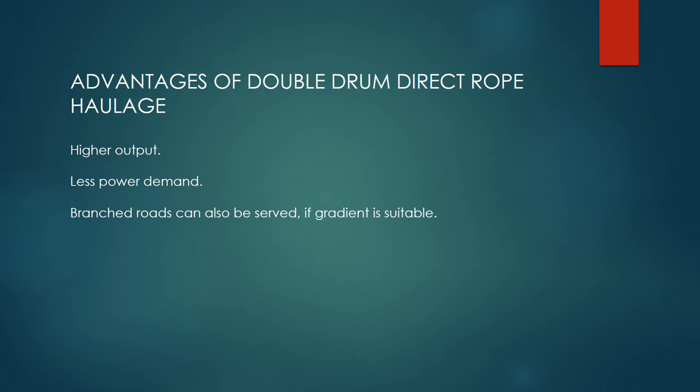Advantages of Double Drum Direct Rope Haulage: higher output, less power demand, and branched roads can be served if the gradient is suitable.